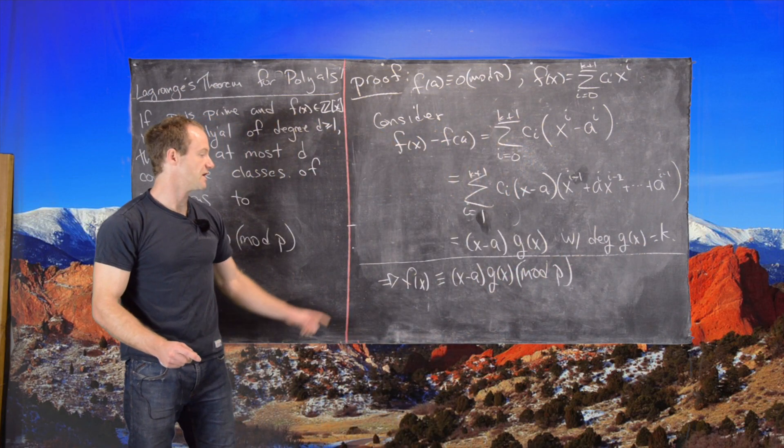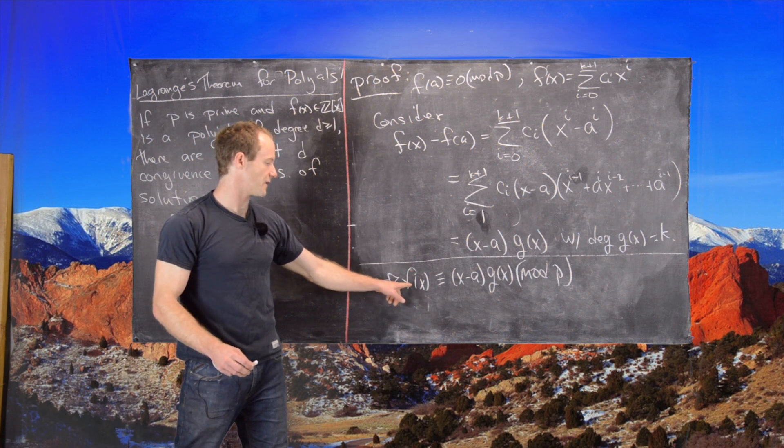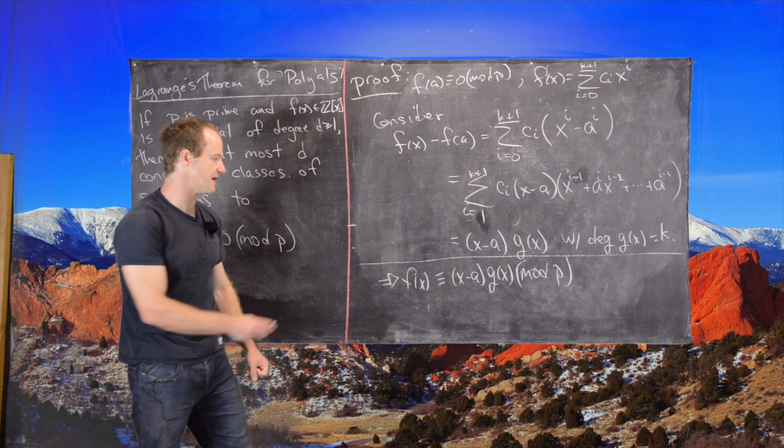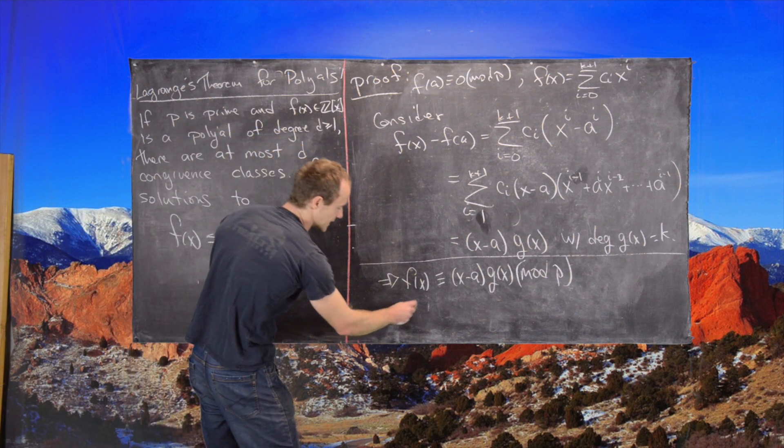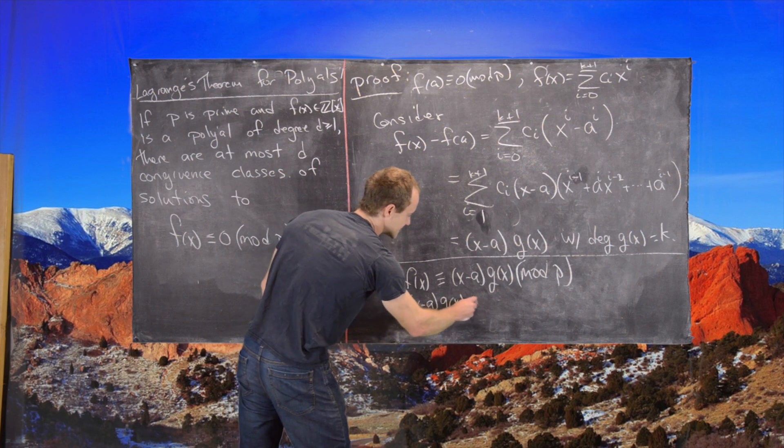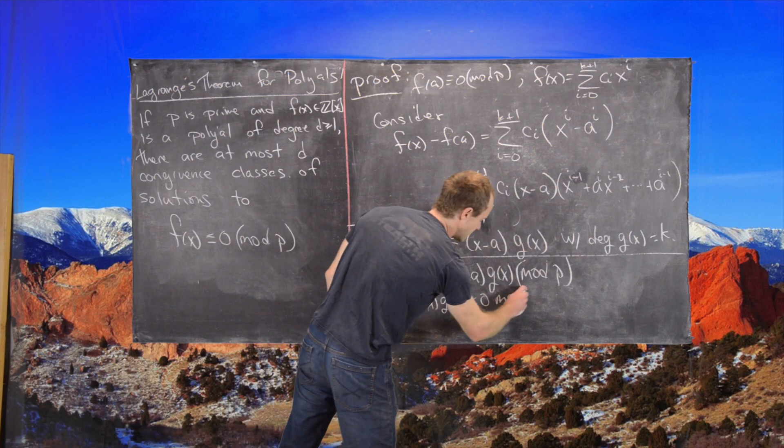that means we can say F of X is congruent to X minus A times G of X mod P. Further, solving the polynomial congruent to 0 mod P is equivalent to solving the congruence X minus A times G of X is congruent to 0 mod P.